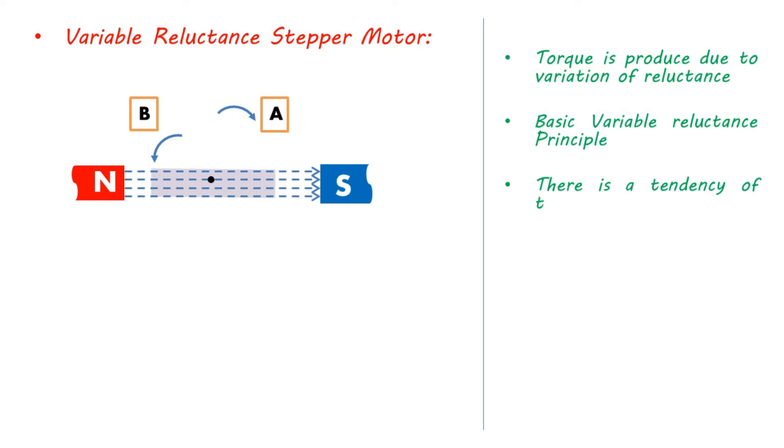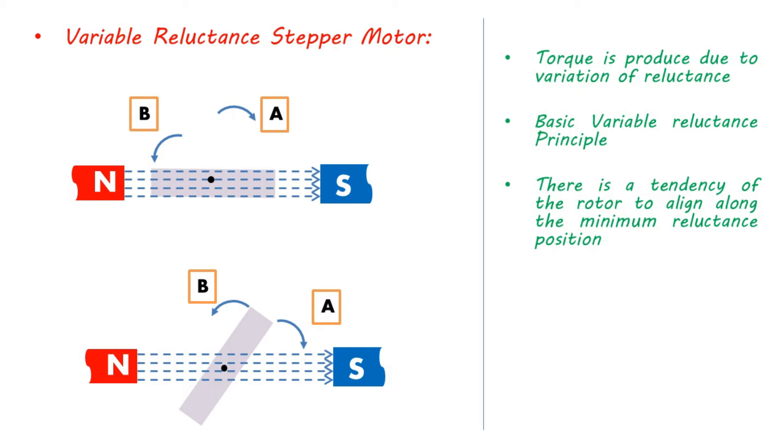There is a tendency of the rotor to align along the minimum reluctance position. While in the second case shown in the bottom figure, it will rotate in clockwise direction and allow the flux to pass through it. If we shift the orientation of stator MMF, rotor aligns to attain this new minimum reluctance position. In this motor, reluctance is varied by switching the phases sequentially, and hence it is called variable reluctance motor.